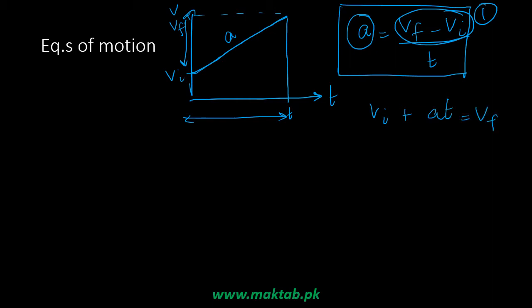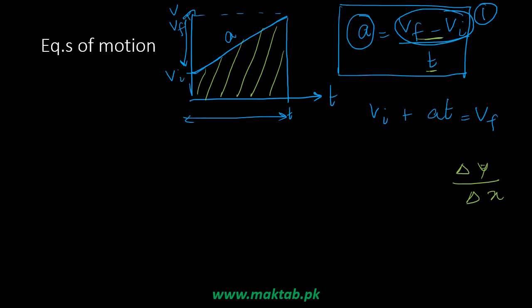The next equation of motion comes from the area under the curve. The slope equals change in Y over change in X. The area under the curve — we multiply velocity with time — gives displacement. Looking at this curve, we can see a rectangle and a triangle. We find the area of the triangle and add it to the rectangle area to get the total area under the curve.